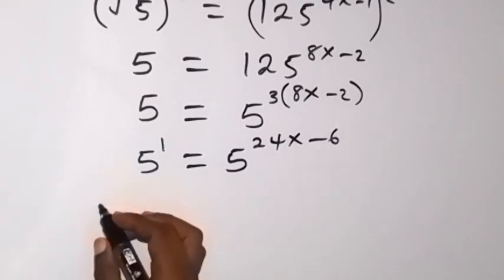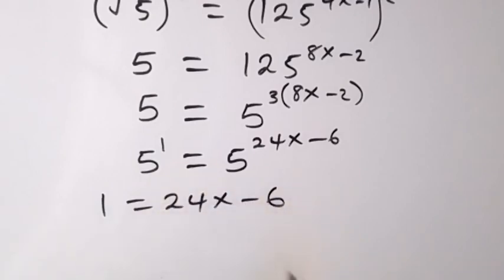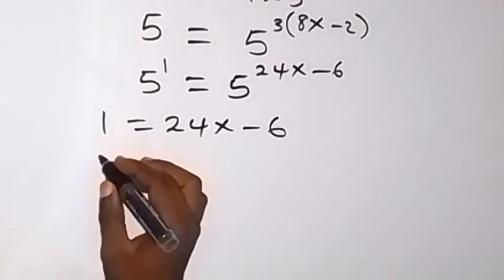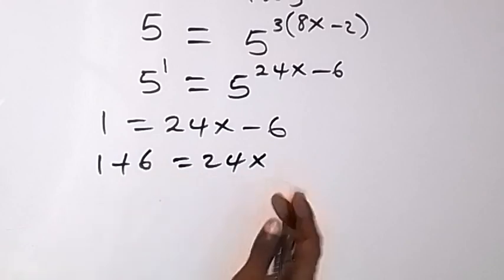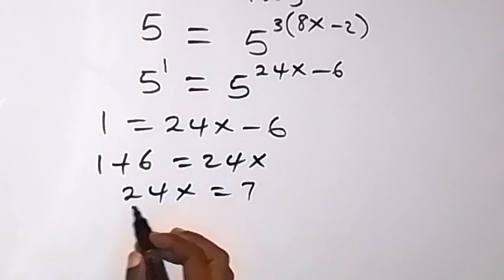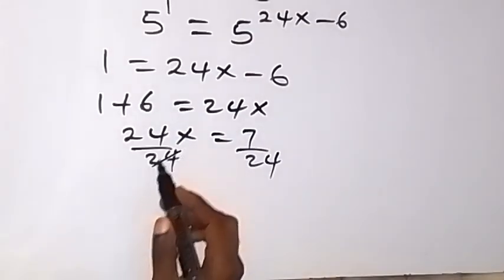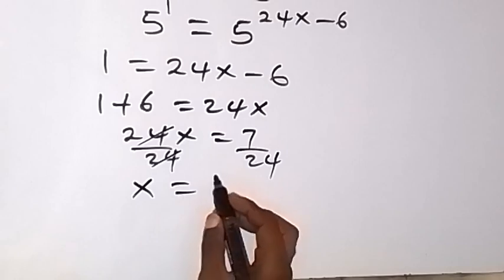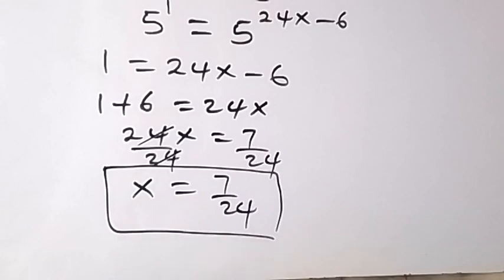What we have is 5 raised to power 1 equals 5 raised to power 24x minus 6. Since we have the same base, we can equate the powers: 1 equals 24x minus 6. Carrying minus 6 to the other side gives us 1 plus 6 equals 24x, so 7 equals 24x. Dividing both sides by 24, x equals 7 over 24.